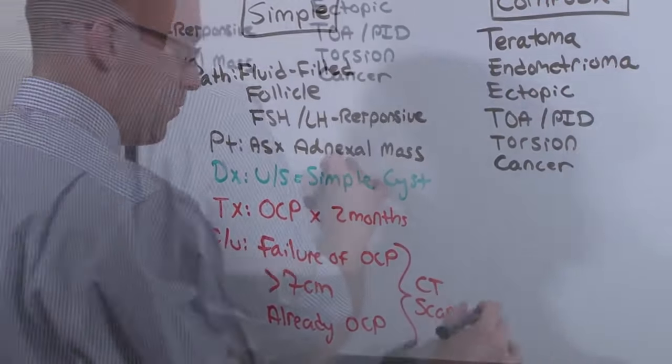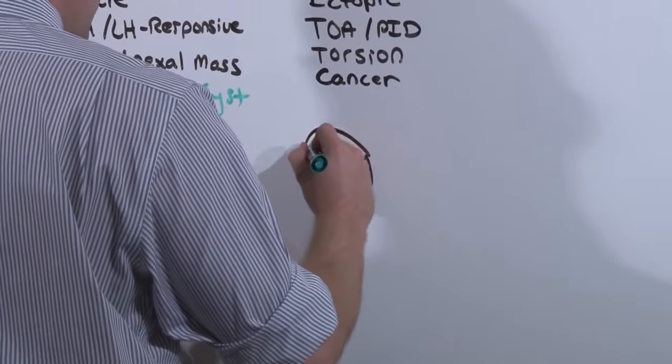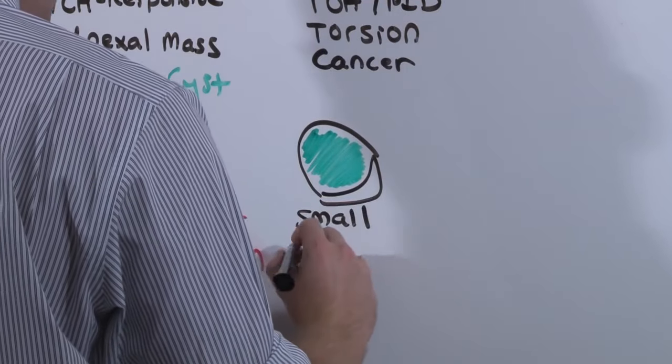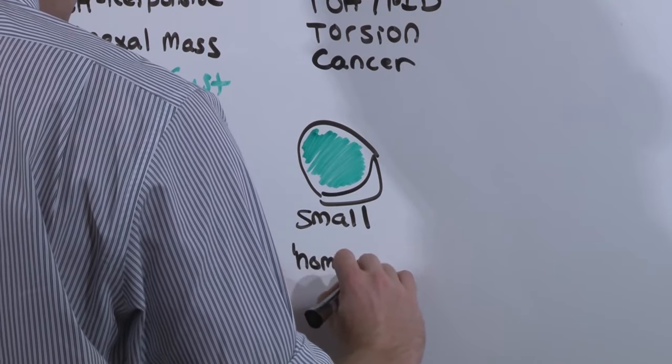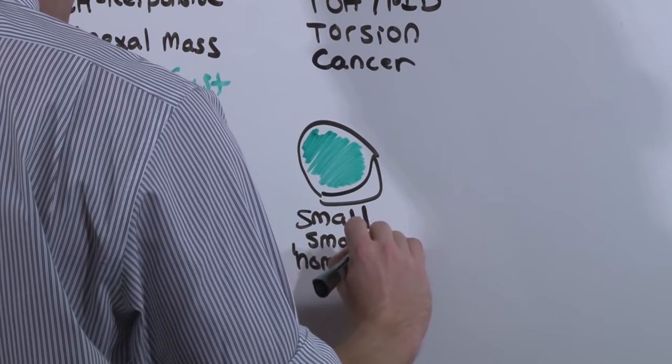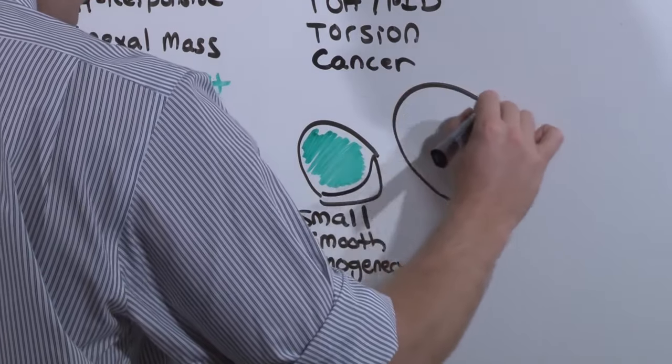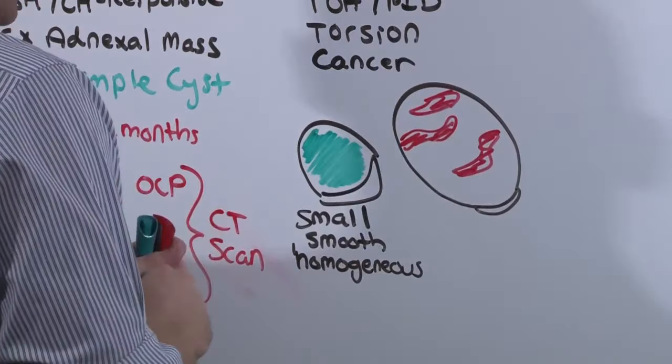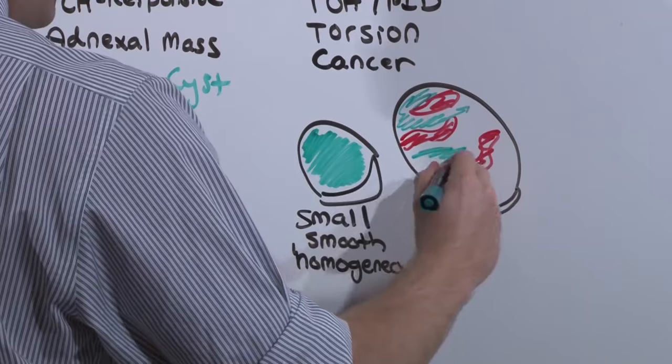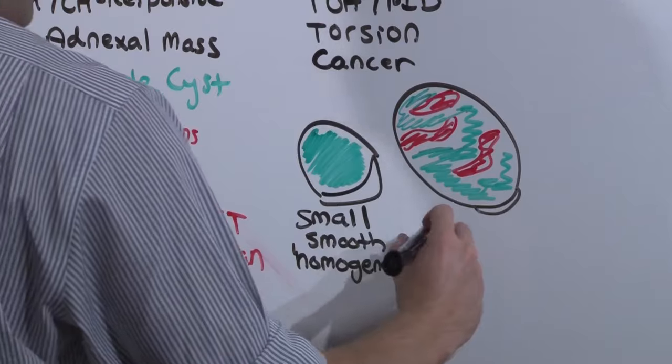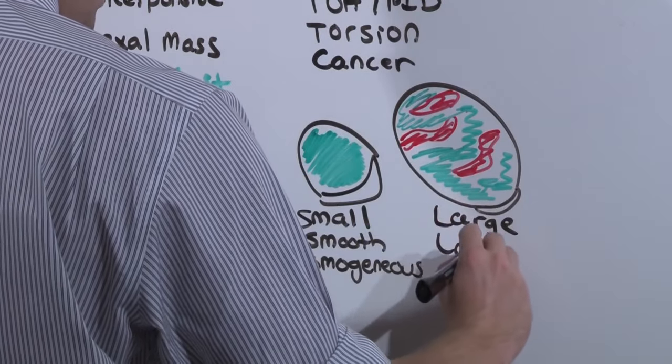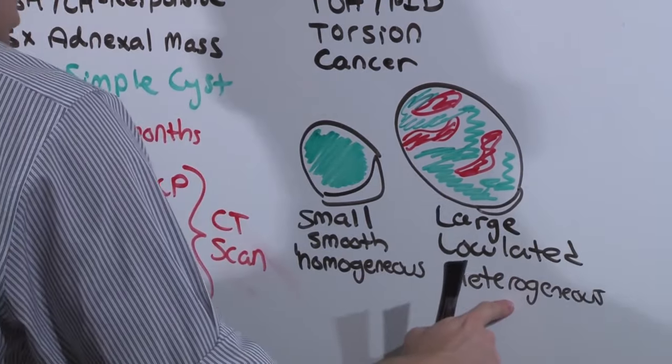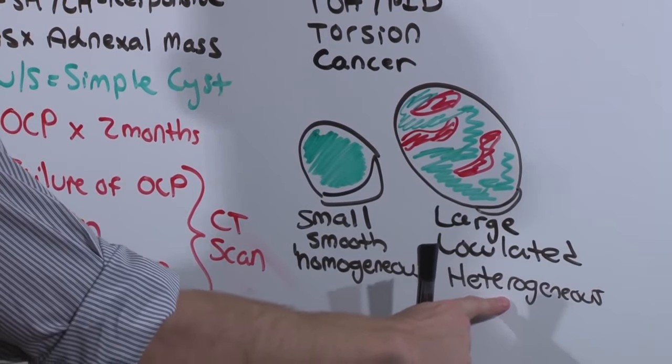Let me show you what they look like. A simple cyst is generally like a balloon. It's smooth, it's homogeneous. There aren't any septations or loculations. It's generally small, homogeneous, and smooth. Whereas a complex cyst is large. It's got multiple different loculations and lobulations. It's septated. You can see multiple different color echoes on the ultrasound. It is not smooth and contiguous like a balloon. It is large, loculated or lobulated, and heterogeneous.